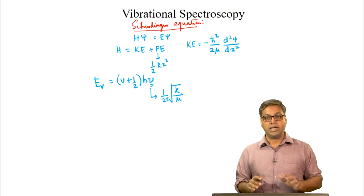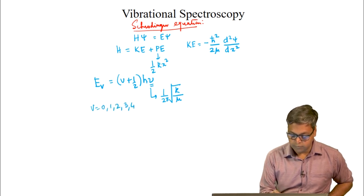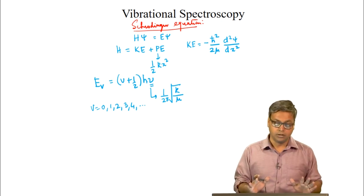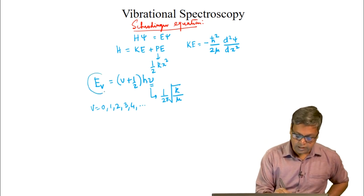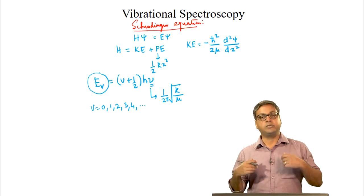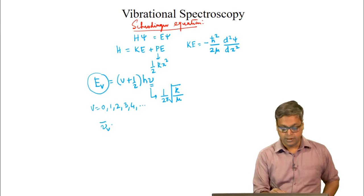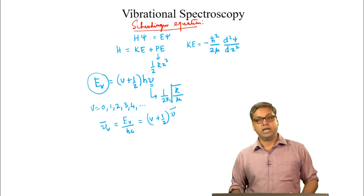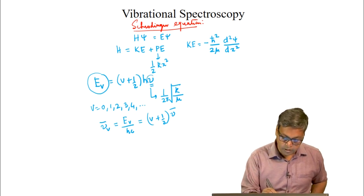The vibrational quantum number v can take integral values: v = 0, 1, 2, 3, 4, and so on. For every value of v there is a corresponding wave function and energy level. The vibrational energy E_v is in joules; to express it in wavenumbers we write ν̃_v = E_v / hc = (v + ½)ν̃. The vibrational energy depends on the reduced mass through its dependence on the frequency.